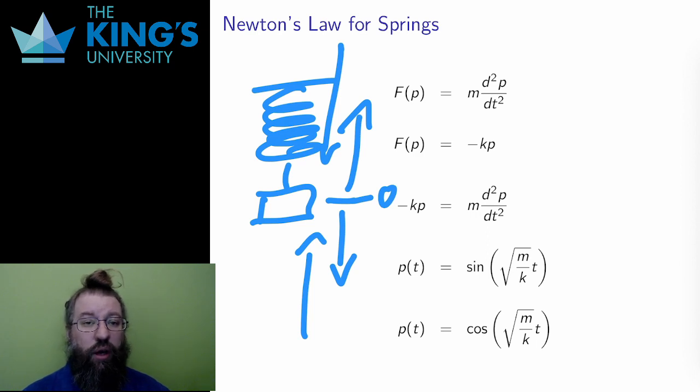This is called Hooke's law. The force of a spring is negative kp, where k is some constant and p is position. The negative here is an opposite reaction. If I pull a spring up, it wants to go down, and vice versa.